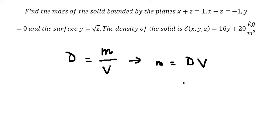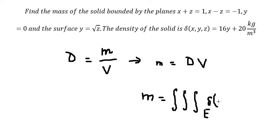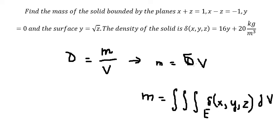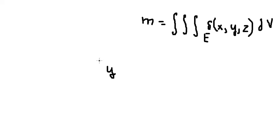To find the mass using the triple integral, we set it up like this. Now we need to find the bounds for x, y, and z. We can see that y equals zero and y equals the square root of z. Since the square root of z always gives a positive number, y should be between zero and the square root of z.